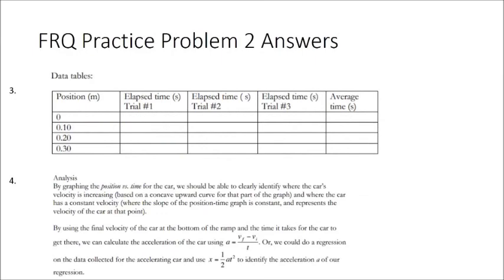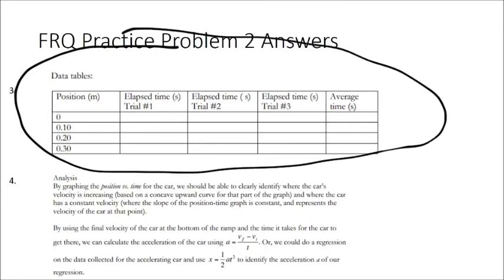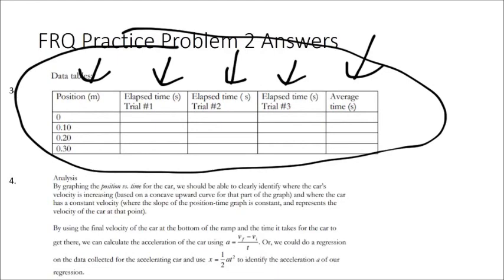Repeat the timing for all distances. With displacement and time, you can calculate velocity. With different velocities, you can calculate acceleration. For the data table, you need position and time columns, doing several trials to average results. To calculate velocities and accelerations: graph the position-time data to identify where velocity is increasing or decreasing, find the slope to get velocity, then use final and initial velocities subtracted and divided by time to calculate acceleration.